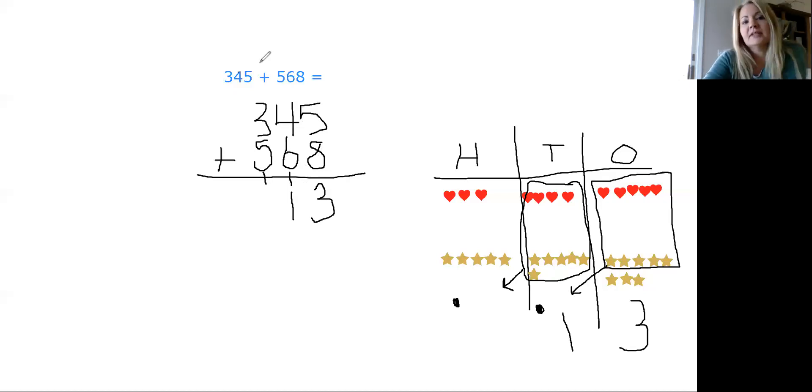Now, just like in the last place, you could put it at the top, but you're less likely to forget to add it in if you stick it at the bottom. And so now we have three plus five plus one. This is the easiest part of all. Three plus five is eight plus one is nine. That's right. Three plus five plus one is nine. So now we have our answer. Nine hundred thirteen. That's right, boys and girls.